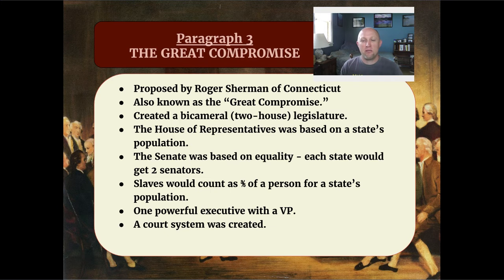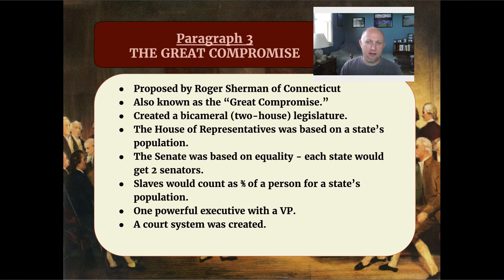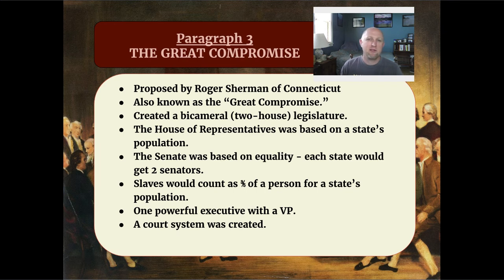The House of Representatives was much more similar to the Virginia Plan because it was based on a state's population — the more people a state has, the more representatives that state has in Congress. The Senate is similar to the New Jersey Plan because every state gets two senators, whether that state is small like Rhode Island or gigantic like California. This compromise was brilliant in that it allowed the Constitutional Convention to continue, because without it the convention might have ended in failure, and we very well could have ended up with a split between North and South.